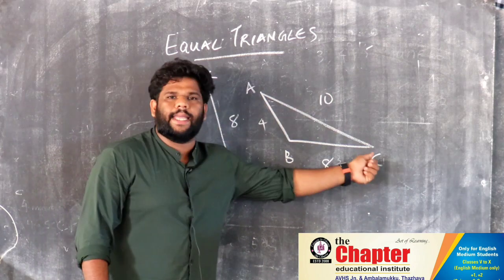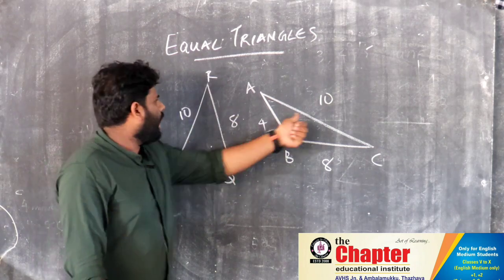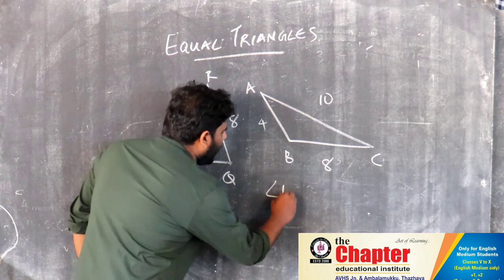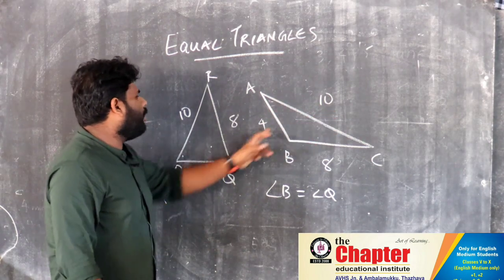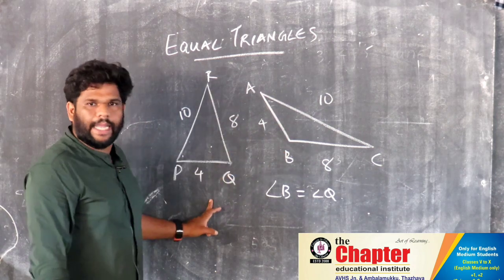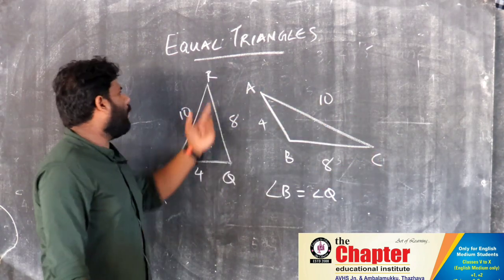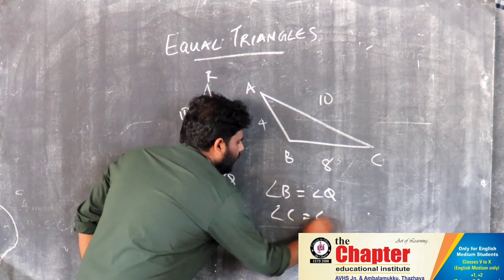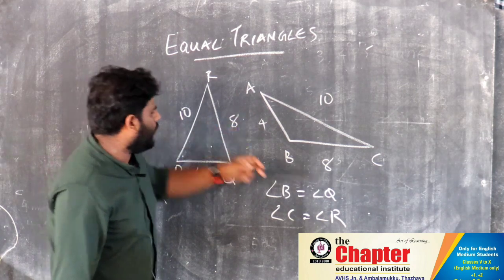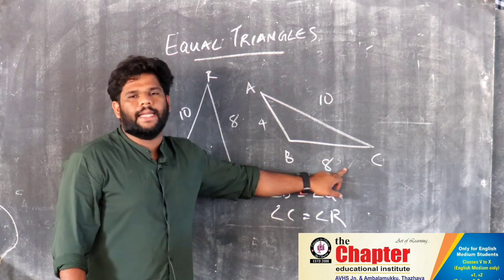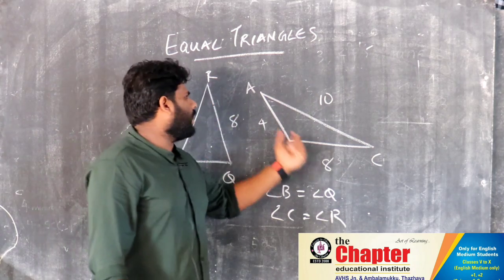PR is AC and they are equal to the opposite angles. PR is opposite angle Q, and AC is opposite angle B. We also know that angle B is equal to angle Q, because PR is the opposite angle. Now, PQ and AB are equal. The two sides are opposite. The opposite angle of one side is C, and the opposite angle of the other is R. QR is 8 cm, and its opposite angle is C.